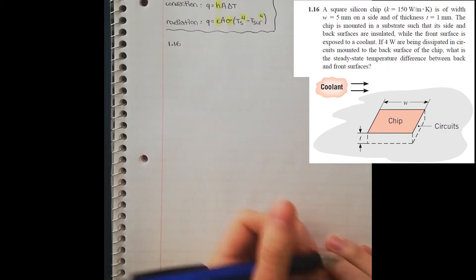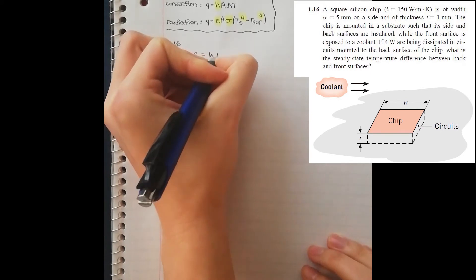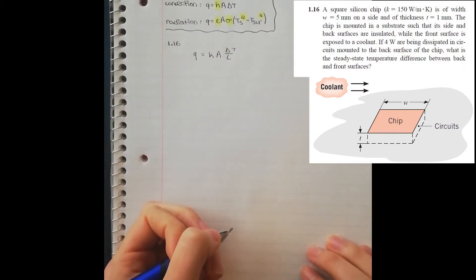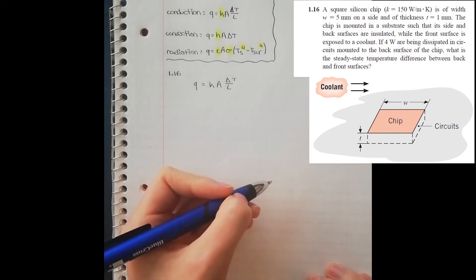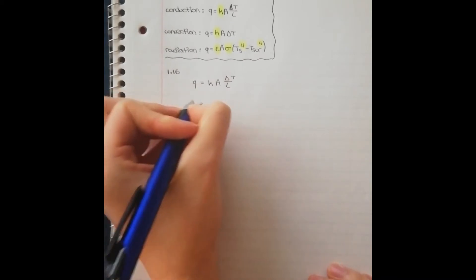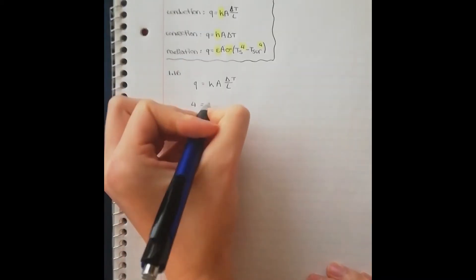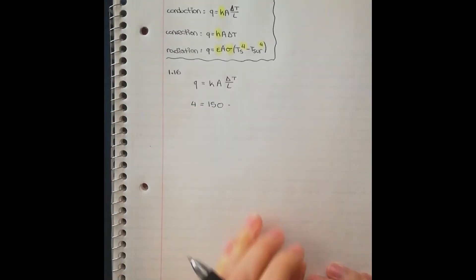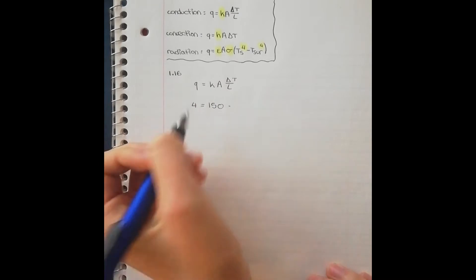So now we're ready to start writing the guiding equation for conduction. And you can start filling it in slowly with the information that you know. We know that 4 watts are being dissipated, and Q is in the units of watts. So we can write down 4 is equal to. We also know the constant K, it's 150.